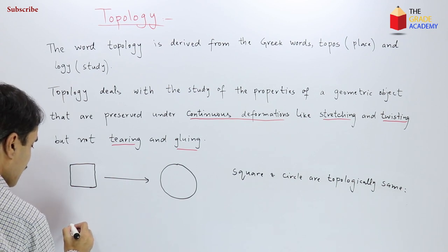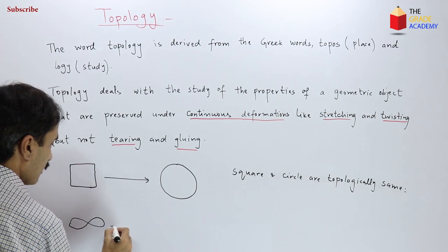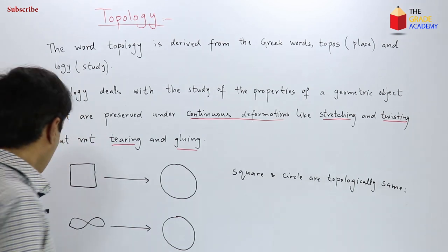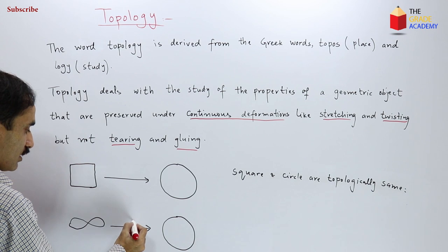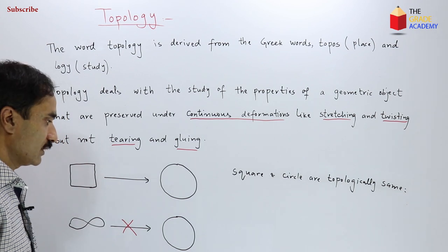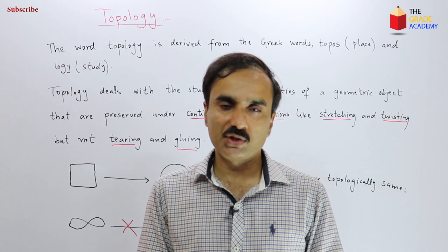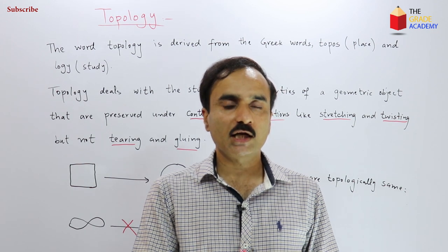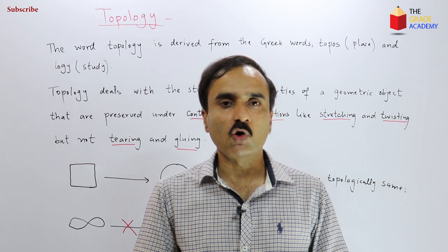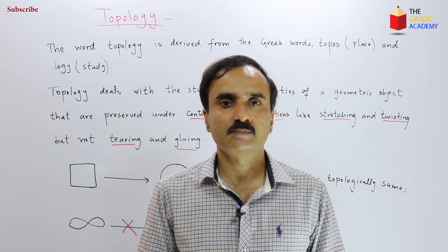If we consider the figure-8 shape, it cannot be deformed into a circle without breaking. So two objects in topology are said to be the same if one can be deformed into another by a continuous deformation, without breaking, gluing, or tearing.